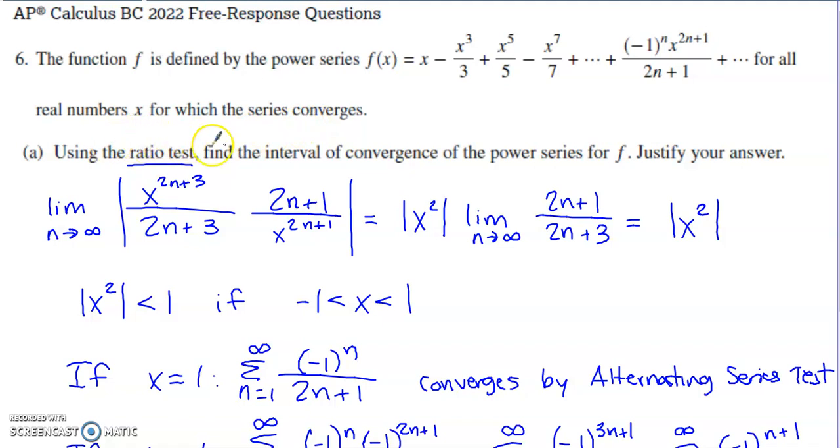Now in part a, they actually ask us to find the interval of convergence for this power series. So using the ratio test to determine that interval of convergence, remember the ratio test has absolute value, so we don't have to worry about this alternating term when we establish the ratio. But I'm going to check the ratio of the next term, the n plus first term, divided by the current term, or in the case of what you see on my screen, times the reciprocal of the current term or the nth term.